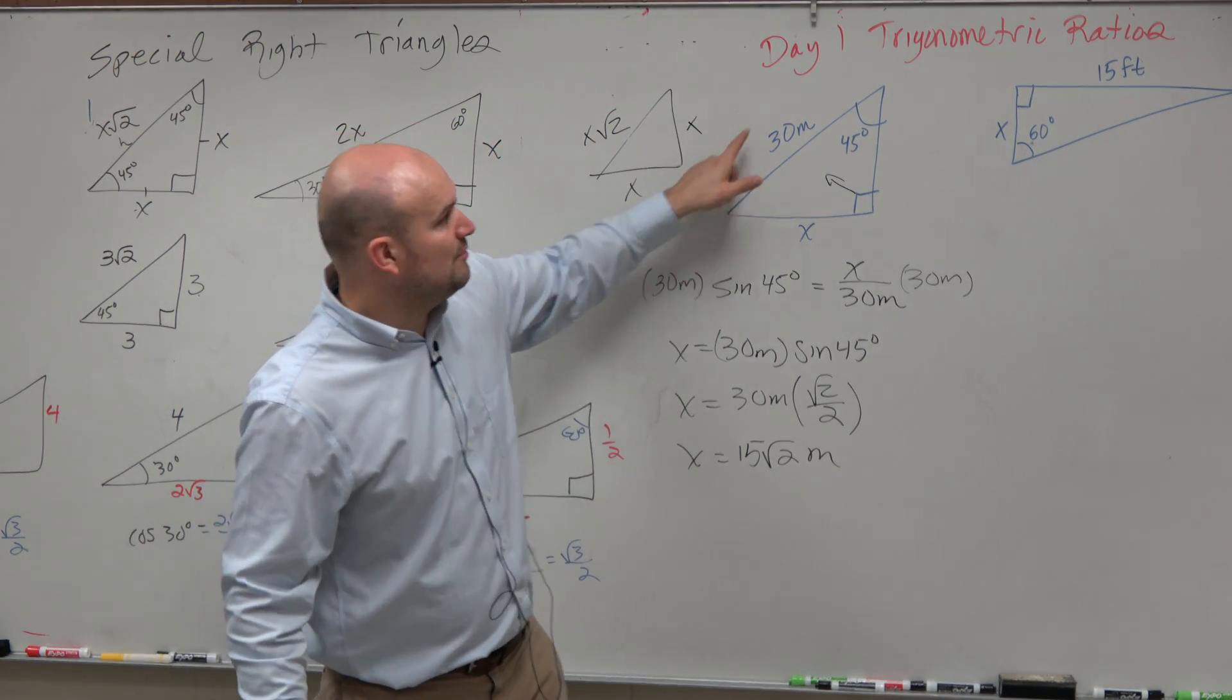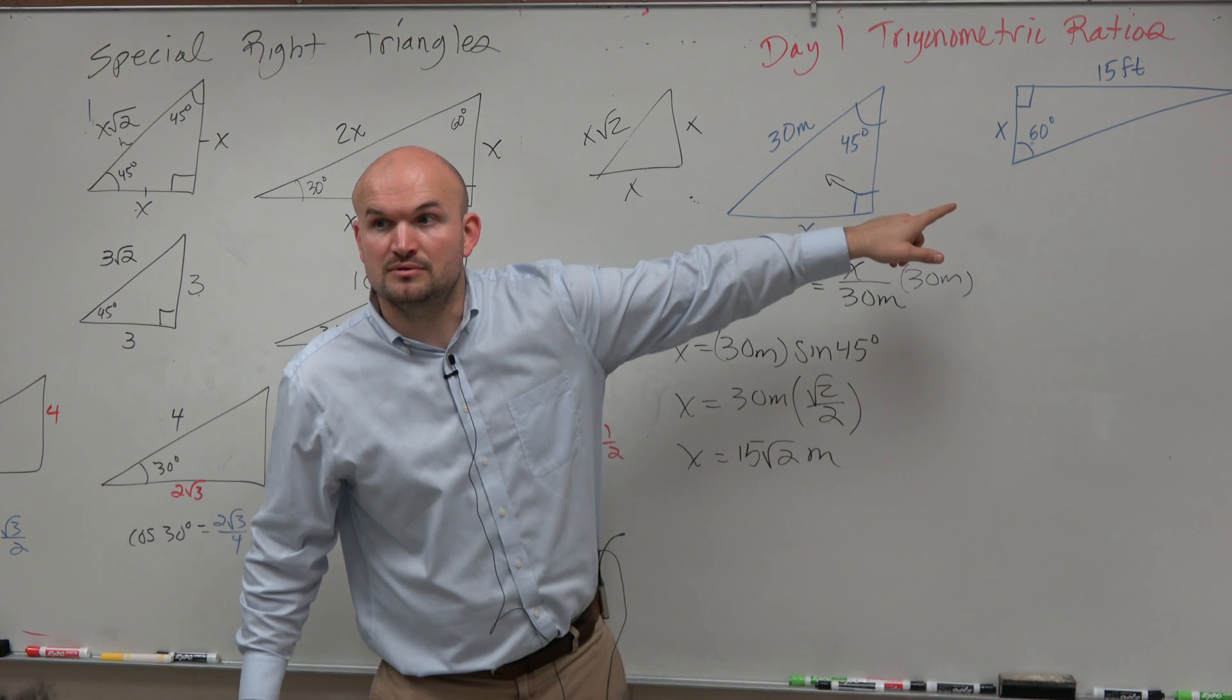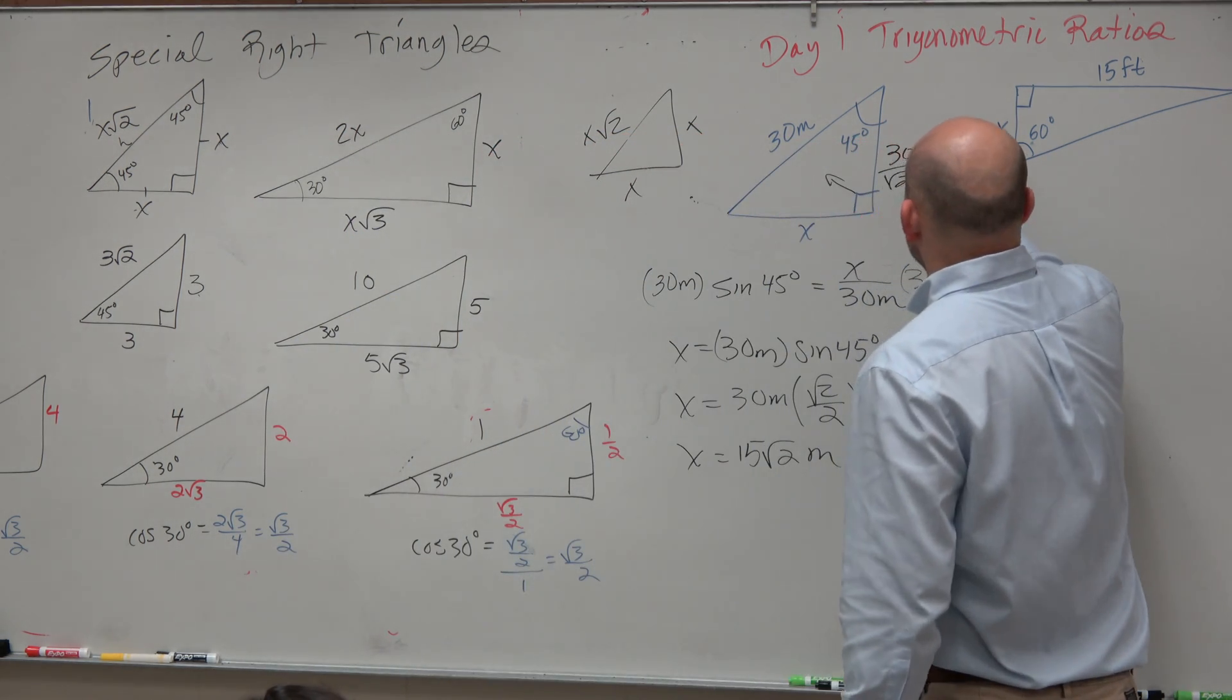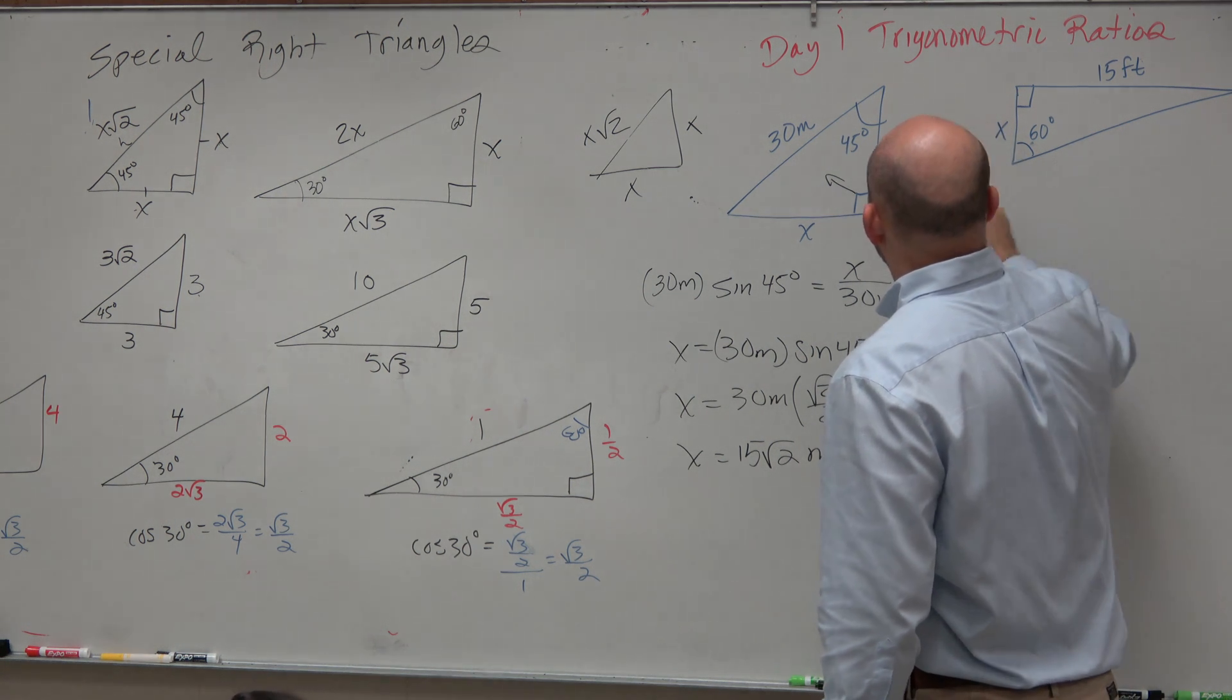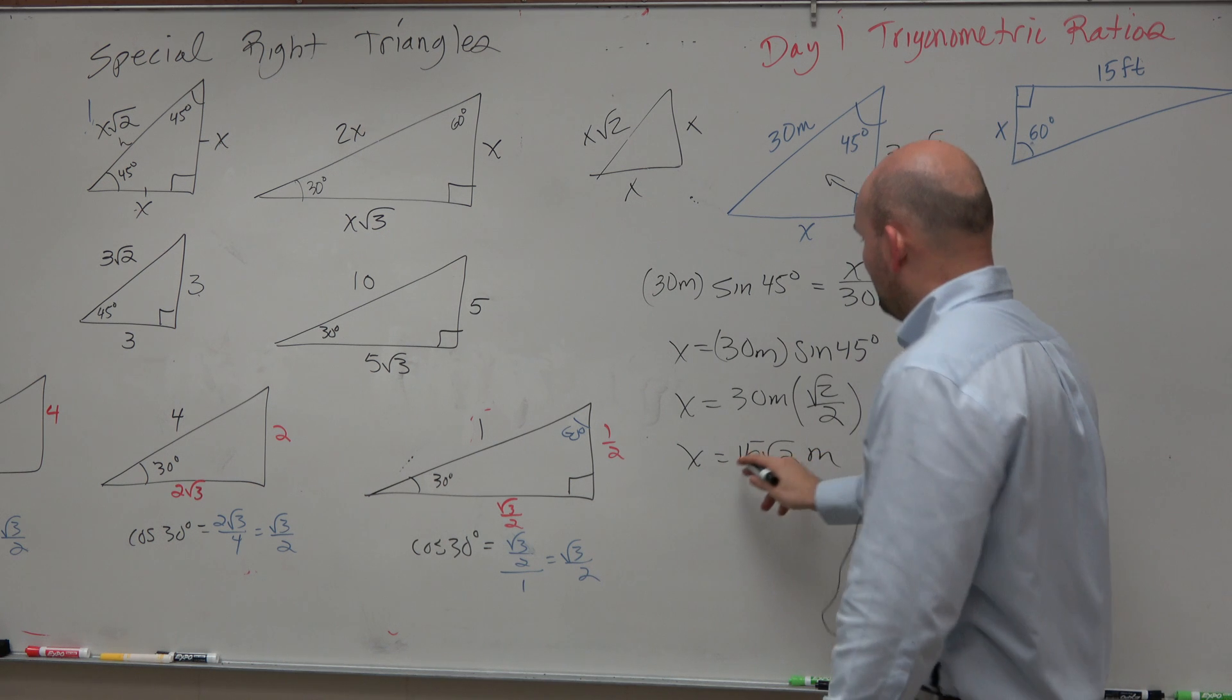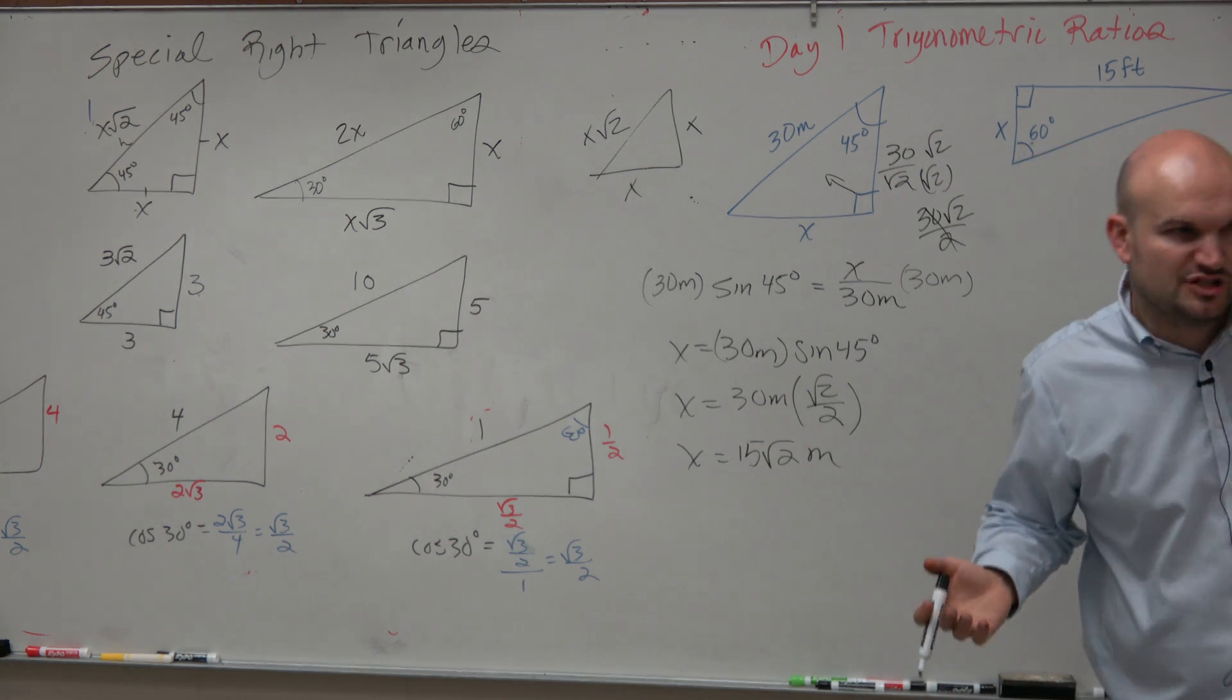So if we have 30 meters and we want to go back, that means we just need to divide by the square root of 2. 30 divided by the square root of 2. Rationalize the denominator. You get 30 square root of 2 over 2, which equals 15 square root of 2. Same answer, just two different ways of doing it.